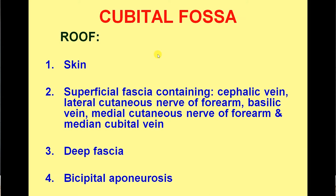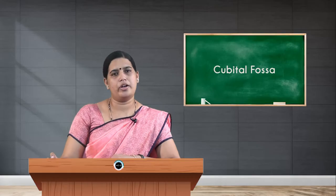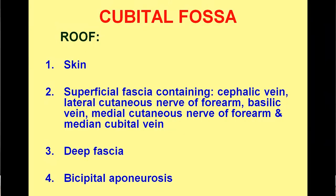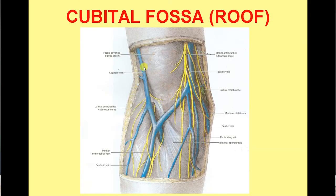We will cover the roof, floor, and boundaries of the cubital fossa. The roof consists of, from superficial to deep: skin, then superficial fascia containing the cephalic vein laterally, basilic vein medially, and the median cubital vein — the joining vein used for intravenous injections. You also see the medial and lateral cutaneous nerves of the forearm, the bicipital aponeurosis — an expansion from the tendon of biceps brachii before its insertion to the radial tuberosity — and the deep fascia.